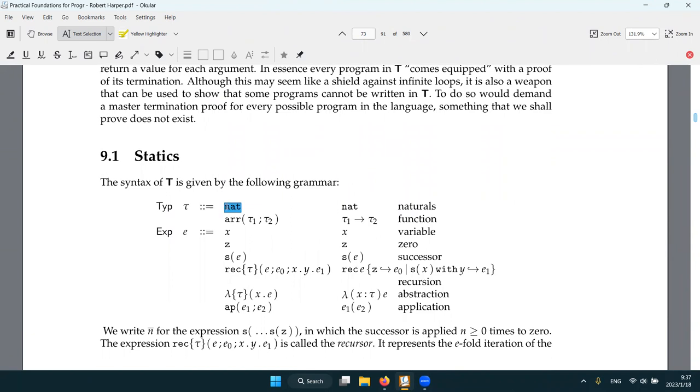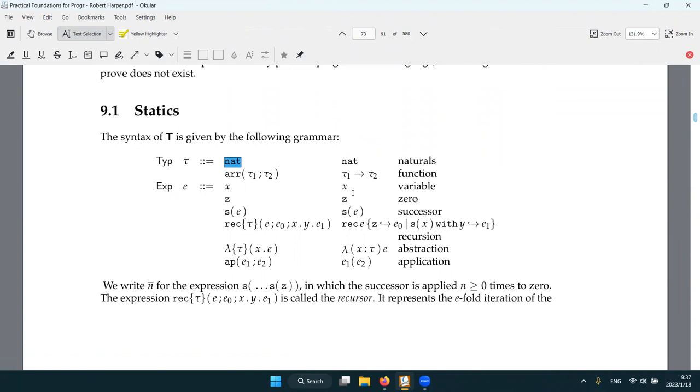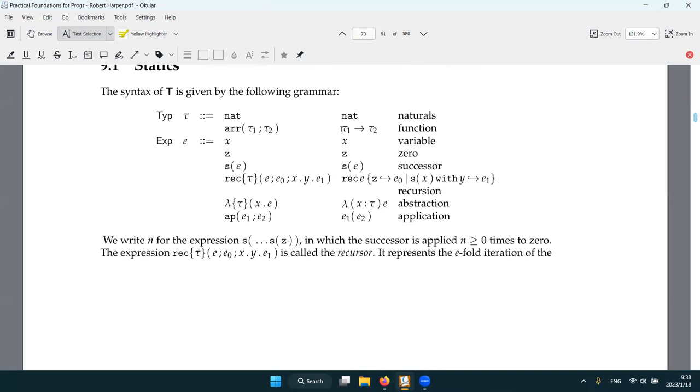And system T, in our system T, first we need the definition of natural number. We don't have like generic sum type here, but we can just define natural number as its specific thing. Natural number is either zero or a successor. And then we also have the exactly the same thing to define like function abstraction application. And this is the interesting part. This is the primitive recursion.